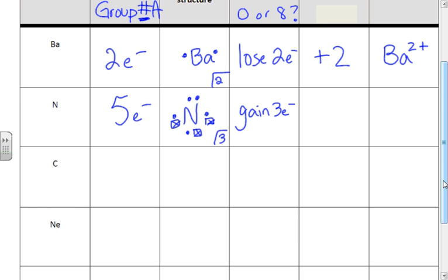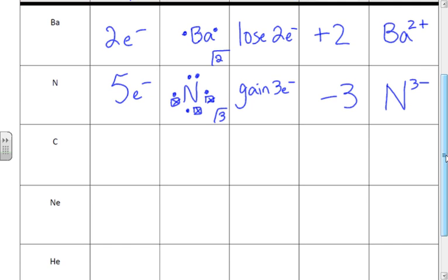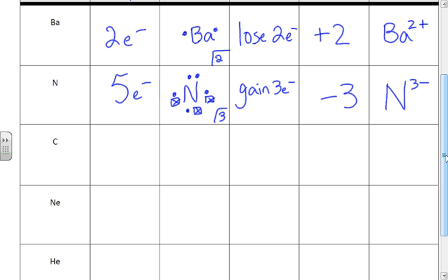So the charge is going to be negative because electrons are negative. We're gaining those negative particles. So then it's N3-. So we have an example where we lost. We have an example where we gained. How many valence electrons does carbon have? Four. And this is what makes carbon so good as being the element that life is based on because it can bond with how many things? Four. So it could lose four to get to zero, or it could gain four to get to eight. Sometimes it'll do one. Sometimes it'll do the other. So we're going to put both. It could gain four. It could lose four.